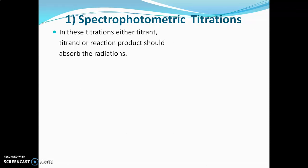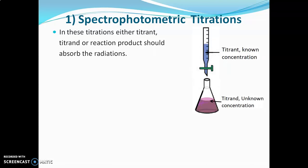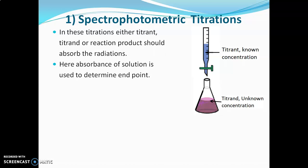In spectrophotometric titrations, either the analyte, titrant, or reaction product should absorb radiation. The titrant whose concentration is known is generally present in the burette, while the analyte whose concentration is unknown is generally in the conical flask. The absorbance of the solution is used to determine the end point. These titrations are based on Beer's law, which explains the directly proportional relationship between absorbance and concentration.